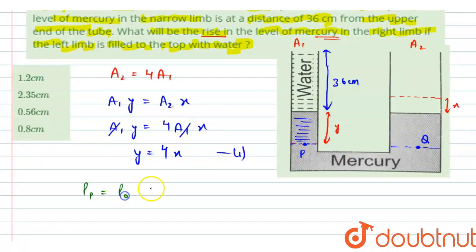So if I write the pressure at point P, it would be equal to P0, that is atmospheric pressure, plus the depth of the water, that is 36 plus y. Pressure at point P we can write as P0, and reaching at P we will have to cross a distance of 36 plus y, then multiply by rho, the density of water, into g.